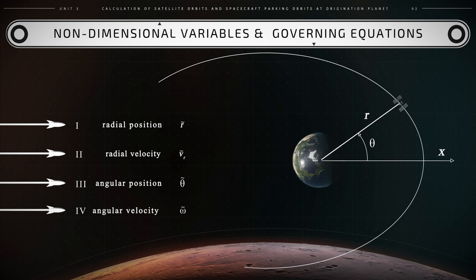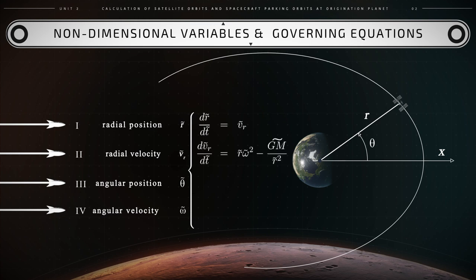Based on these four variables, the four non-dimensional equations to calculate the motion of a spacecraft around Earth are the following. The time rate of change of r̃ equals the radial speed ṽr. The time rate of change of ṽr equals r̃ times ω̃ squared minus GM̃ over r̃ squared. The time rate of change of θ̃ equals ω̃, and the time rate of change of ω̃ equals negative 2 times ṽr times ω̃ over r̃.